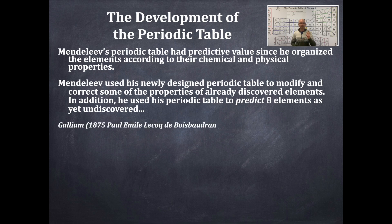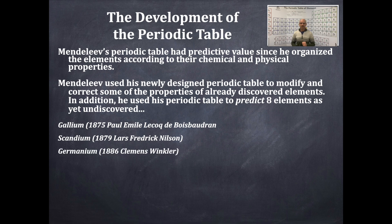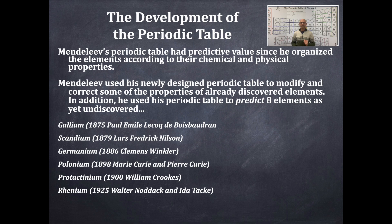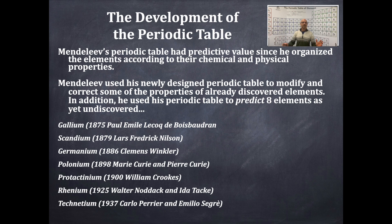Mendeleev used his periodic table to predict eight elements yet undiscovered. The first was gallium, discovered in 1875 by Paul-Émile Lecoq. The second was scandium, discovered in 1879 by Lars Frederik Nilson. Germanium was discovered in 1886 by Clemens Winkler. Polonium in 1898 by Marie and Pierre Curie. Protactinium in 1900 by William Crookes. Rhenium in 1925, technetium in 1937, and francium in 1939.